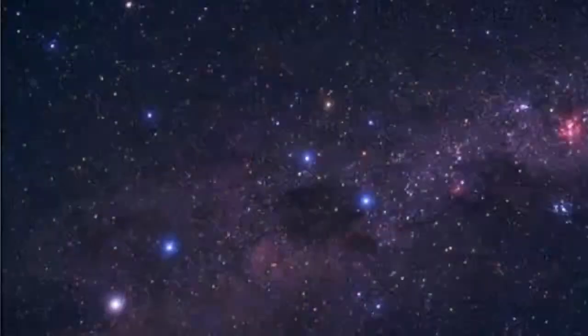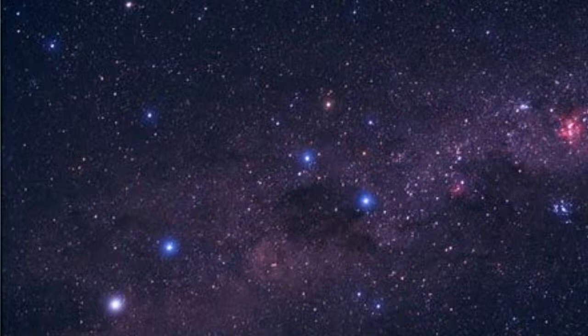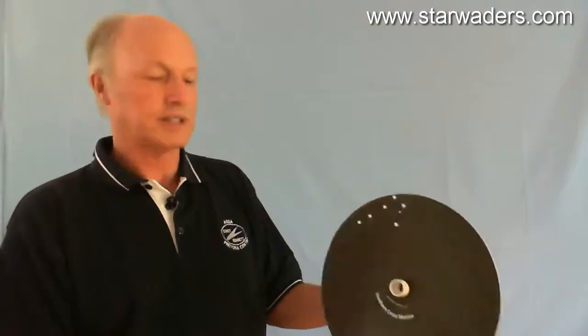Now, this situation applies particularly to the Southern Cross, which, although it is a well-known constellation, is not always easily found. So, Star Waders has developed a model which shows the motion of the Southern Cross.